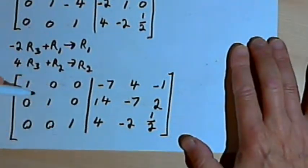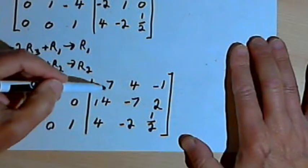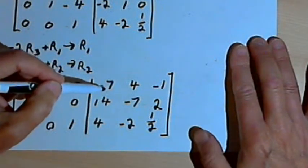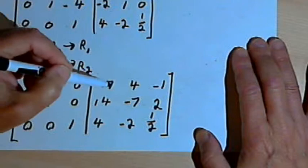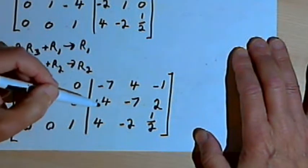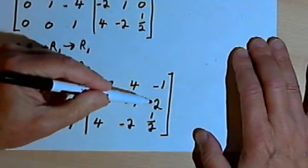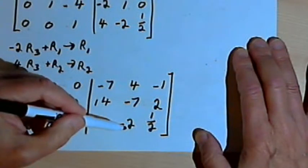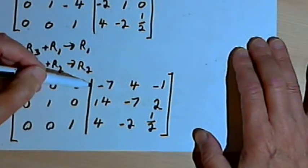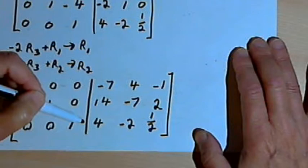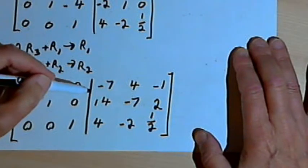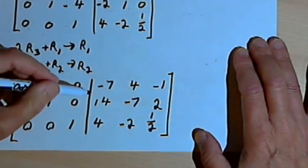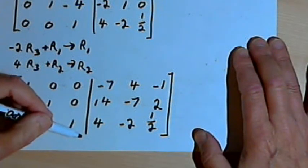On the left side of my augmented matrix I've now got the identity matrix, which means that the right side is the inverse of the original matrix. That inverse is: negative 7, 4, negative 1, 14, negative 7, 2, 4, negative 2, and 1 half. So this is just a bunch of little steps — each individual step is fairly easy, but there are so many steps there are a lot of places to make mistakes. Practice this until it becomes fairly comfortable for you, check your work to make sure you haven't made any mistakes, and you should be fine. I'll see you next time.